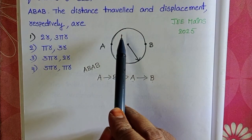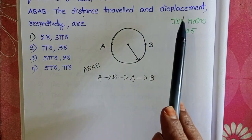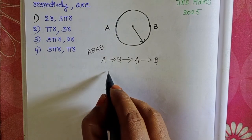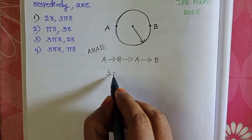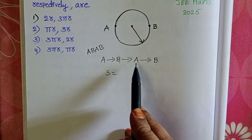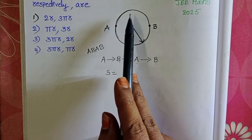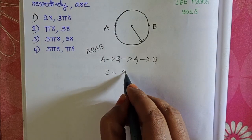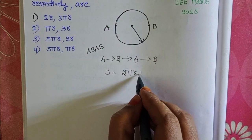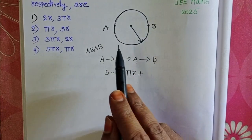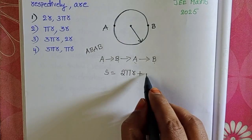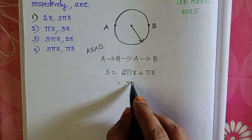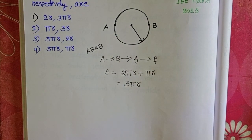In this question, we have to calculate the distance and displacement travelled by the sportsman. First, calculate the distance. Distance equals from A to B and from B to A along the curved path — so one full circle is completed. Circumference of the circle is 2πR, plus from A to B which is half the circular path πR. So 2πR + πR equals 3πR. This is the distance travelled by the sportsman.